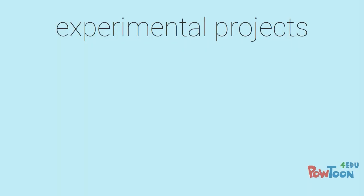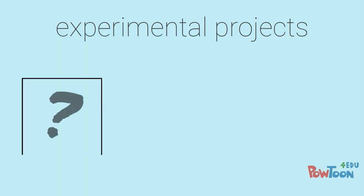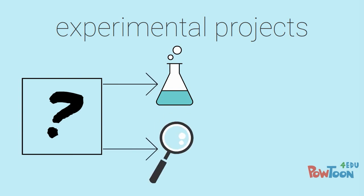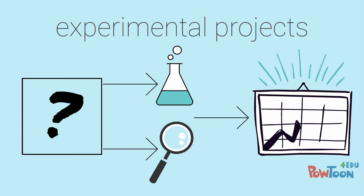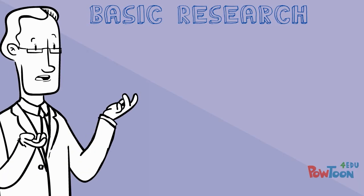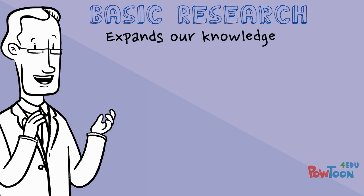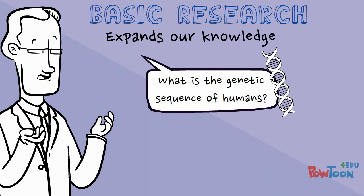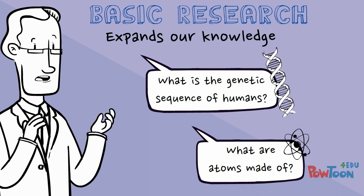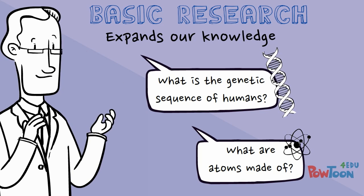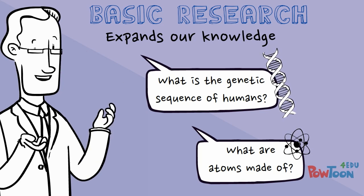An experimental project aims to answer a question by generating testable explanations or predictions, taking the form of either basic or applied research. The goal of basic research is to expand our knowledge, answering questions like: what is the genetic sequence of humans, or what are atoms made of? When basic research is conducted, there usually isn't an application for that new knowledge.